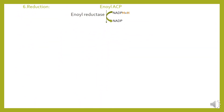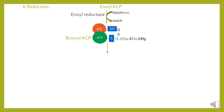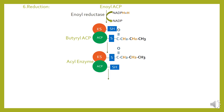Sixth step mein enoyl-ACP ki reduction hogi in the presence of enzyme enoyl reductase, jis se NADPH + H⁺, NADP⁺ mein convert hoga aur NADPH ke hydrogen atoms enoyl-ACP ke andar dakhil ho jaye nge, jis se yeh butyryl-ACP kahlaye ga. ACP butyryl group ko ketoacyl synthase enzyme ke paas shift kar de ga jis se yeh acyl enzyme kahlaye ga. Similarly, step number 2 to step number 6 ek cycle mein loop-wise run karenge taake long chain fatty acid ki elongation ho sake.